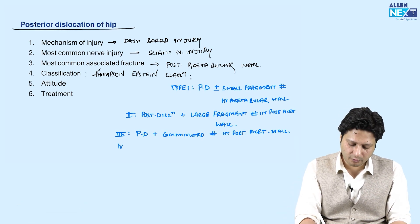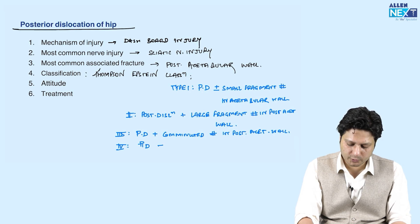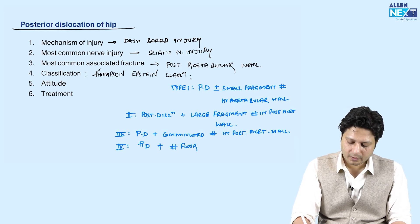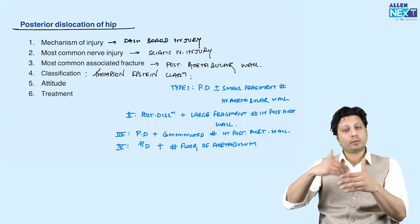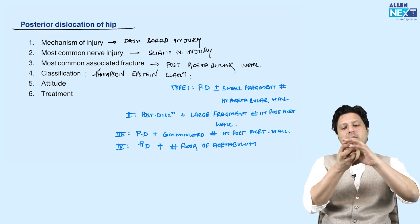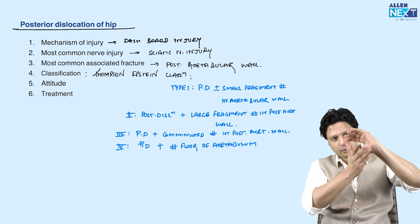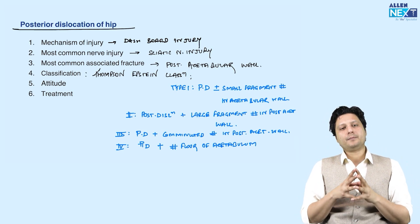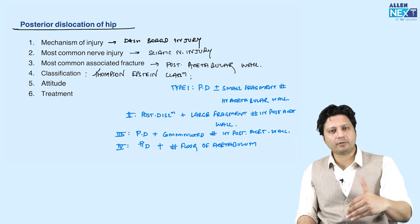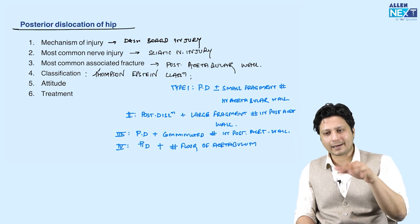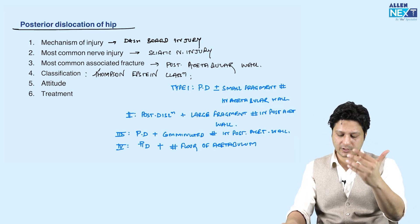Type 4 is posterior dislocation of the hip joint associated with a fracture in the floor of the acetabulum — meaning the articular surface of the acetabulum. This has a relatively poorer prognosis because if there is a posterior dislocation associated with an articular surface fracture, the weight-bearing surface is directly affected, making it a more severe type of injury.